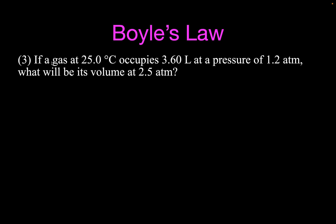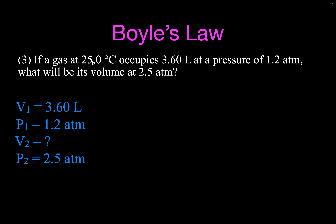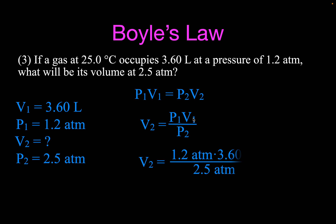For example number three, we have a gas at 25 degrees Celsius that occupies 3.6 liters at a pressure of 1.2 atmospheres. What will the volume be if we increase the pressure to 2.5 atmospheres? Writing the values down — Boyle's Law says we keep the temperature constant, so we start at 25 degrees Celsius and assume the temperature doesn't change. You don't need the temperature in the Boyle's Law equation. We solve for V2: P1 × V1 ÷ P2, and we get 1.7 liters. We increased the pressure, and therefore the volume decreases.